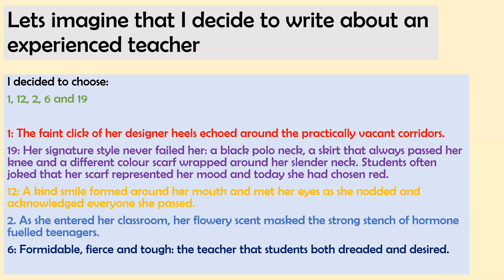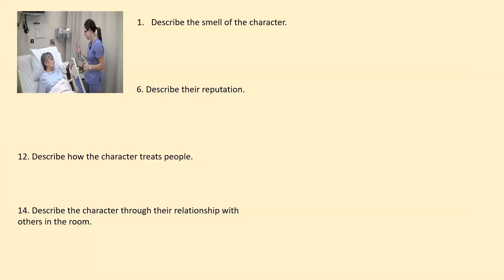'A kind smile formed around her mouth and met her eyes as she nodded and acknowledged everyone she passed. As she entered her classroom, her flowery scent masked the strong stench of hormone-fuelled teenagers. Formidable, fierce, and tough — the teacher that students both dreaded and desired.' You will see that, for example, number six was 'describe their reputation' — that last sentence there is about the teacher's reputation. It's your turn now to choose four and write those four sentences.